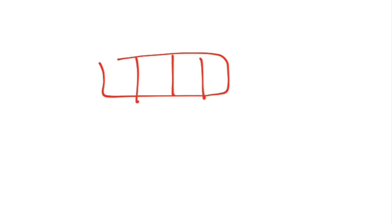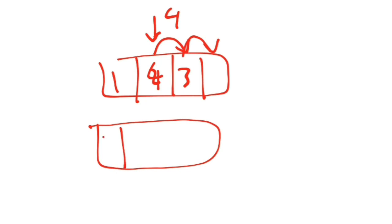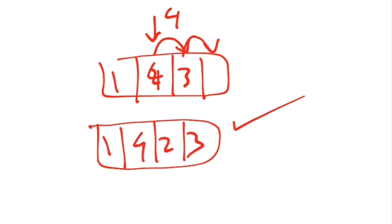If you have to insert an element, suppose this is the array: 1, 2, 3, and you have to insert 4 here. What you will do is shift 3 first, then shift 2, and insert 4 in the correct position. How the array will look — you have to explain it in this way, then it will be more than sufficient. This is the insertion for an array.